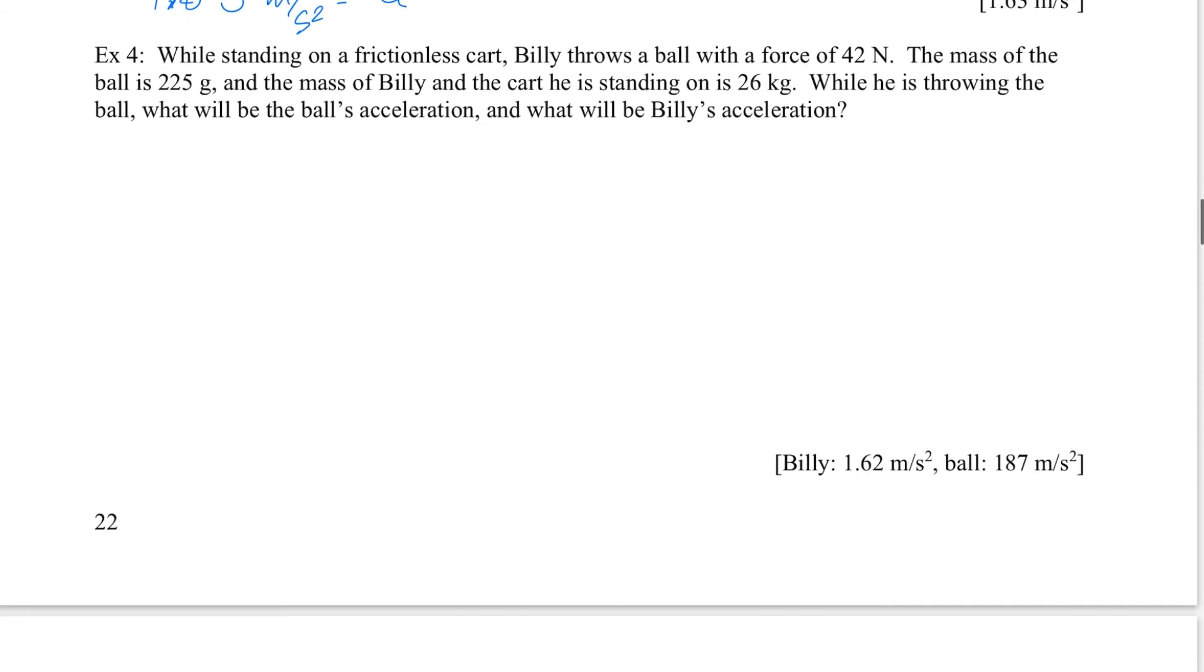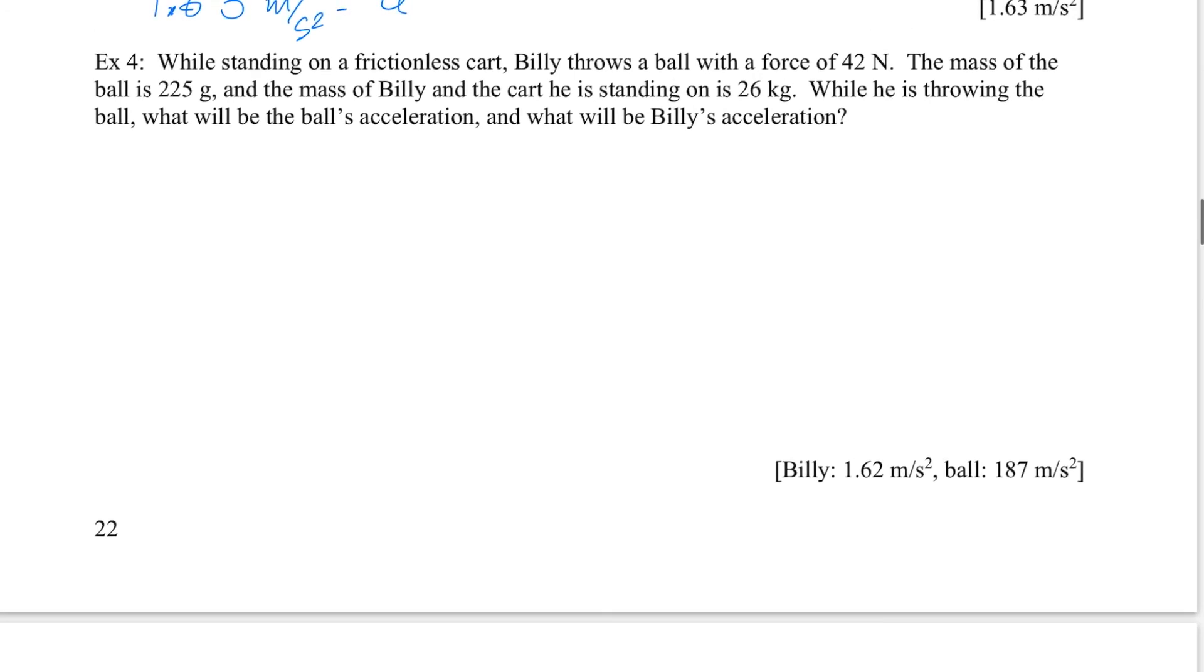Now we have Billy is standing on a hoverboard, maybe. And Billy throws a ball with a force of 42 newtons. The mass of the ball is 225 grams, and the mass of Billy and the cart he is standing on is 26 kilograms. He's throwing the ball. What will be the ball's acceleration and what will be Billy's acceleration? So Billy is throwing a ball. Let's look at Billy first, because the answer for Billy is here first. So here we have Billy. Let's just imagine that Billy is throwing the ball this way. Here's the ball, and Billy's going to try to throw it in that direction. So what's happening if Billy is trying to throw the ball in that direction? What the heck? I'm going to draw the ball first. There's the ball.